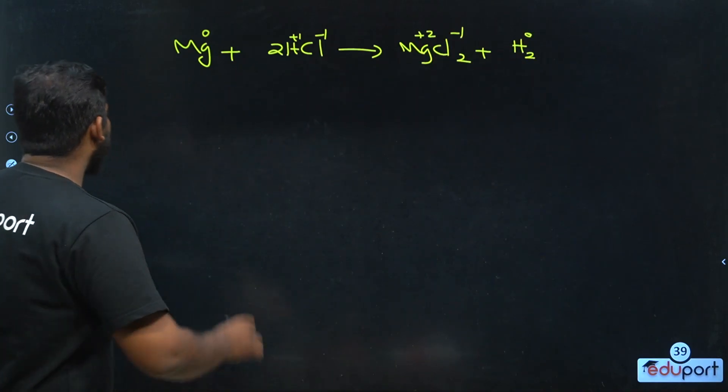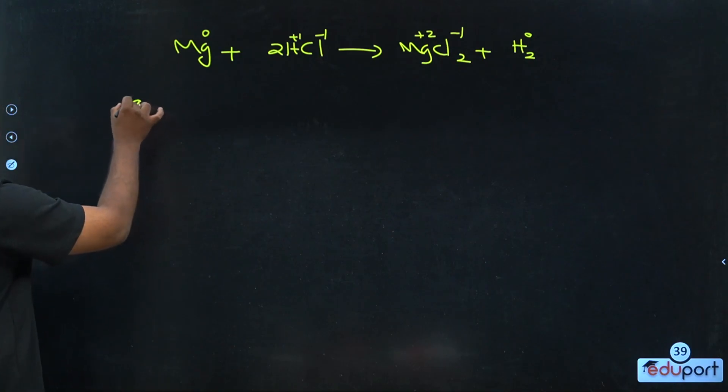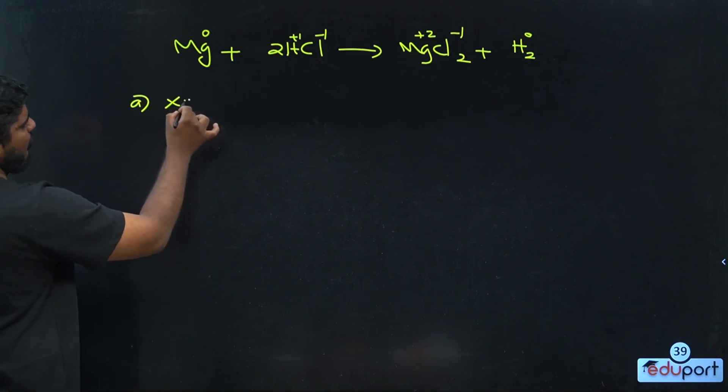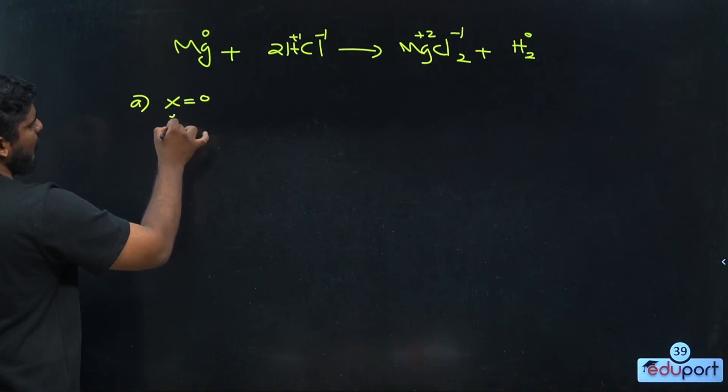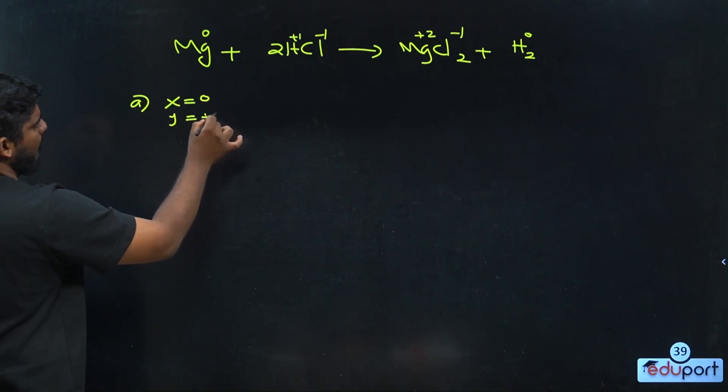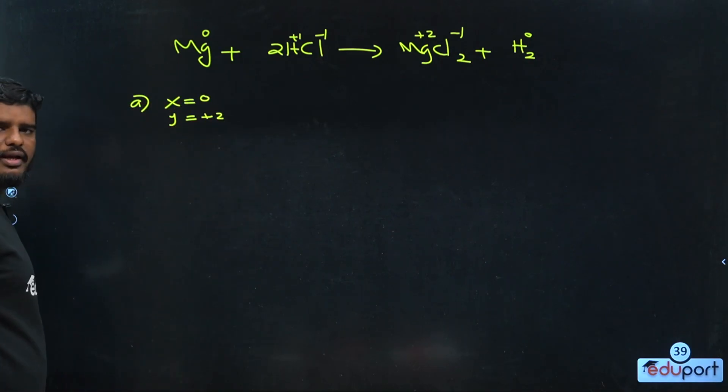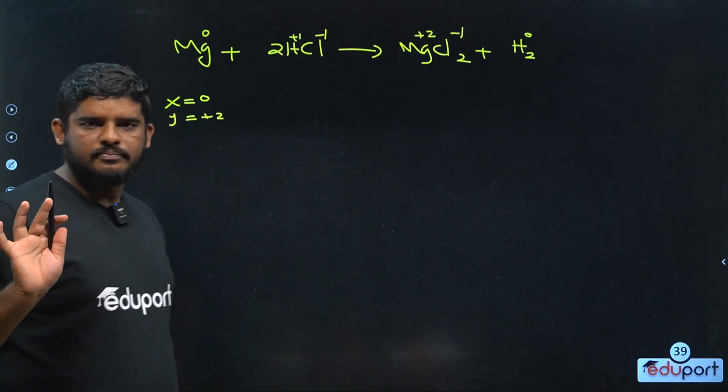My answer is very simple: x is equal to 0, y is equal to plus 2. Can you? Clear?